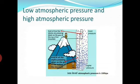At sea level, the atmospheric pressure is more because from the upper layers of the atmosphere down toward Earth, more air is there, and that is why more pressure is there. On top of the mountain the air is thinner, and that is why the pressure is low.